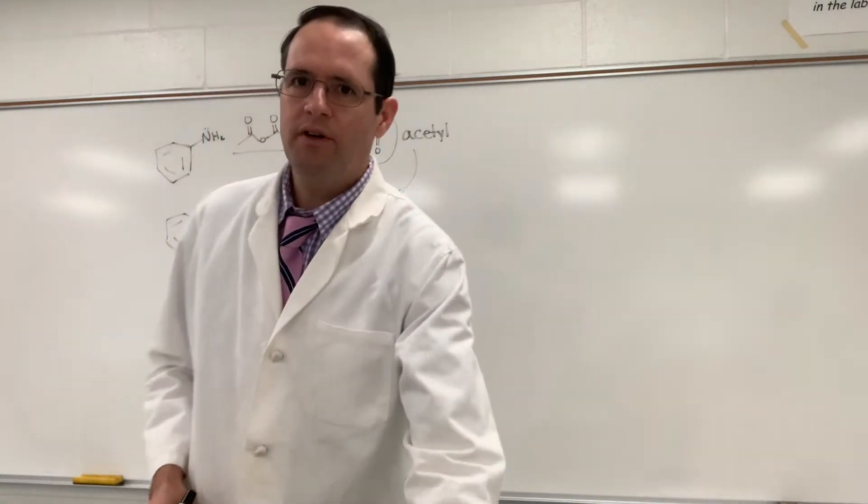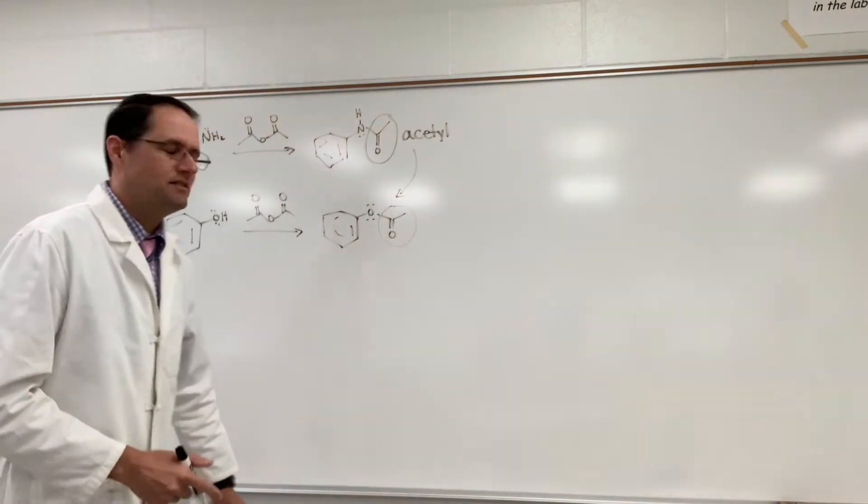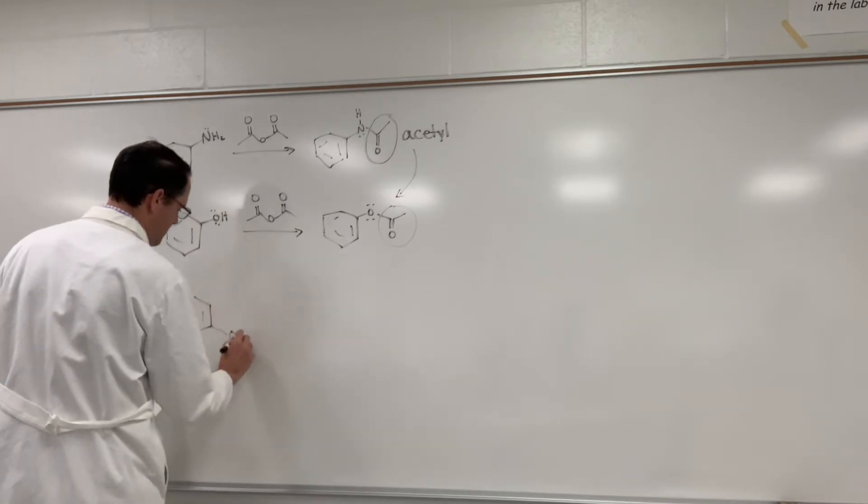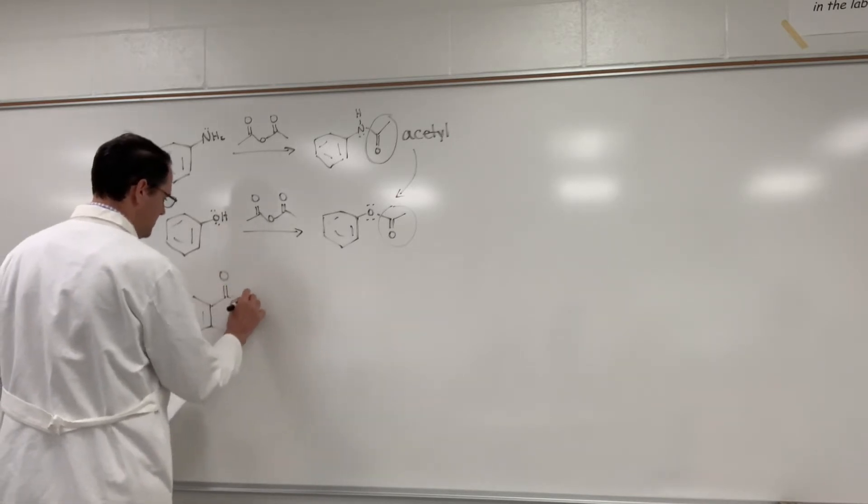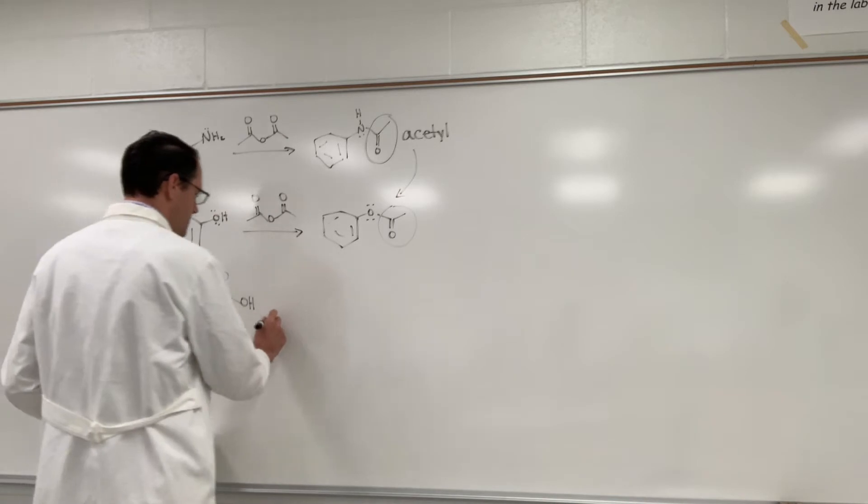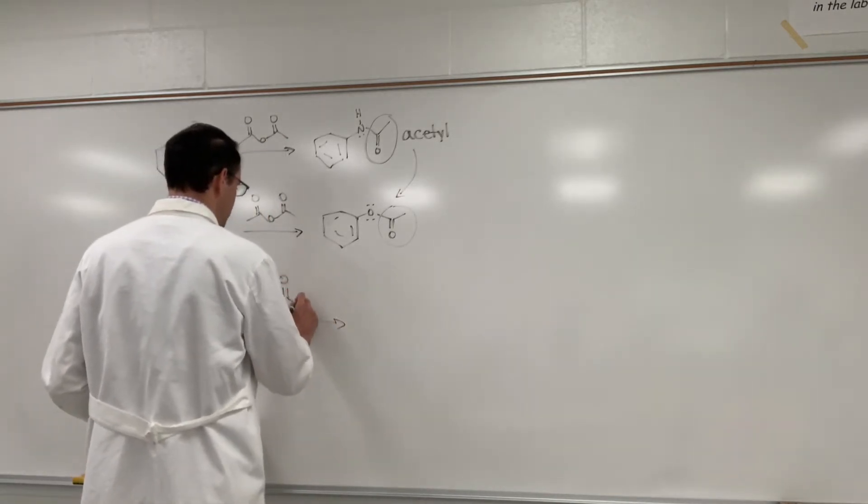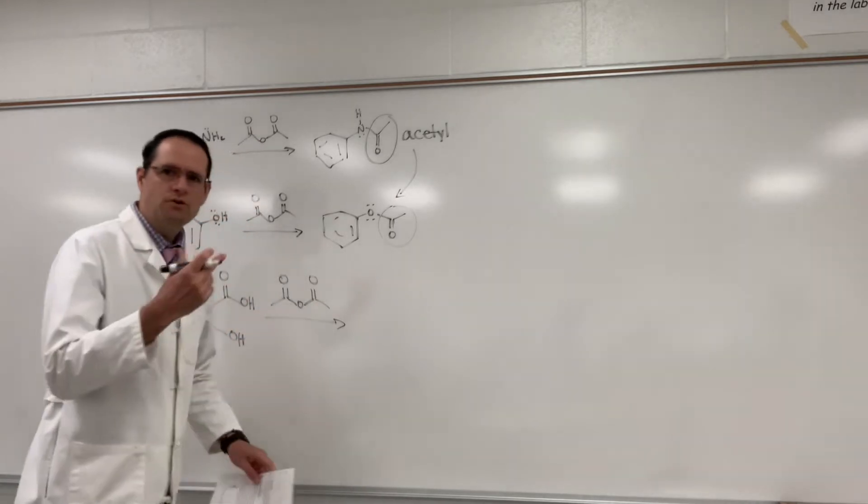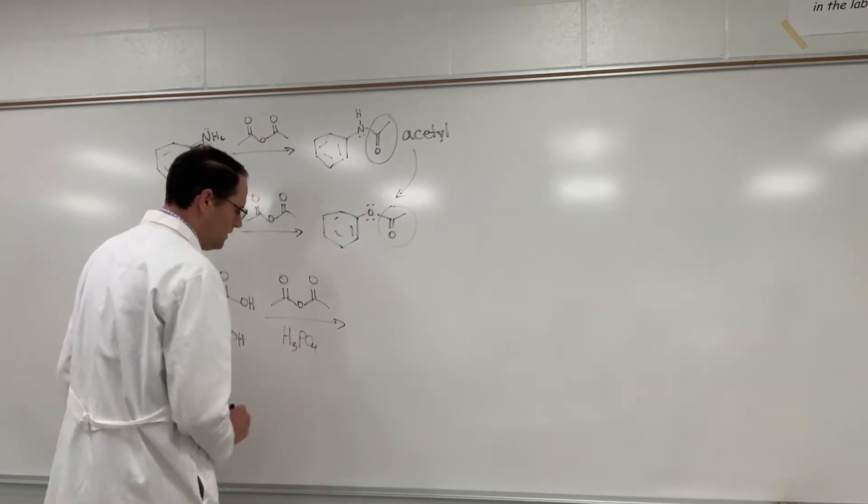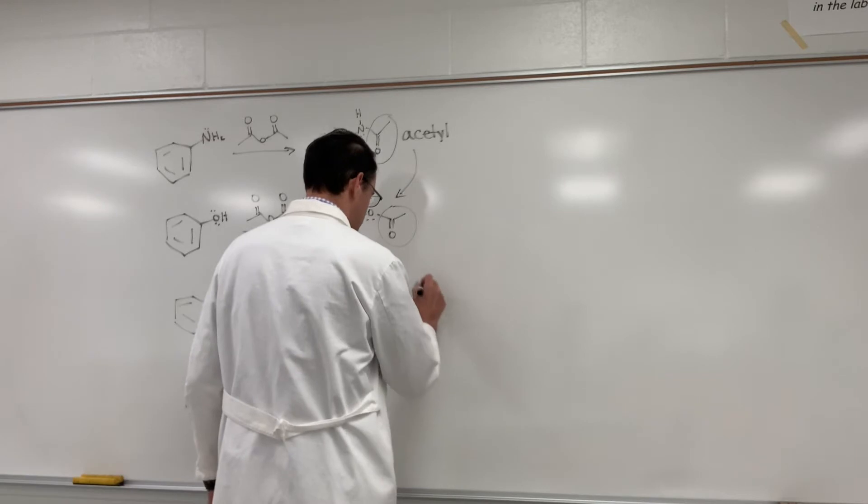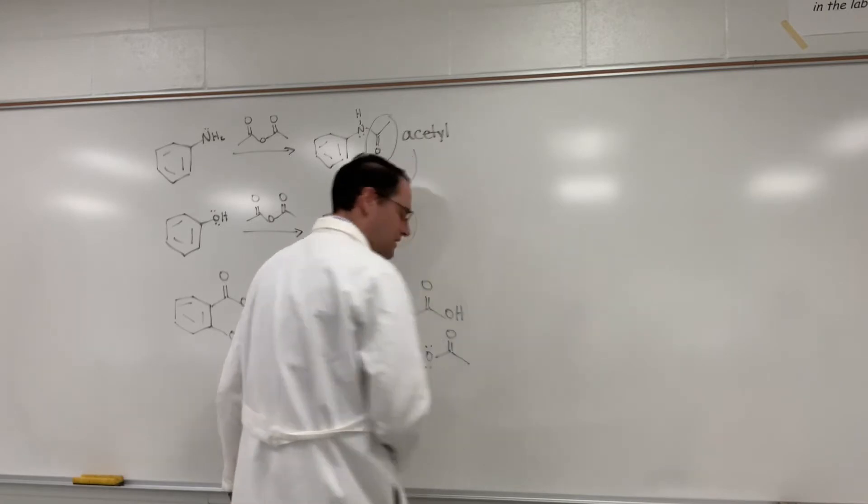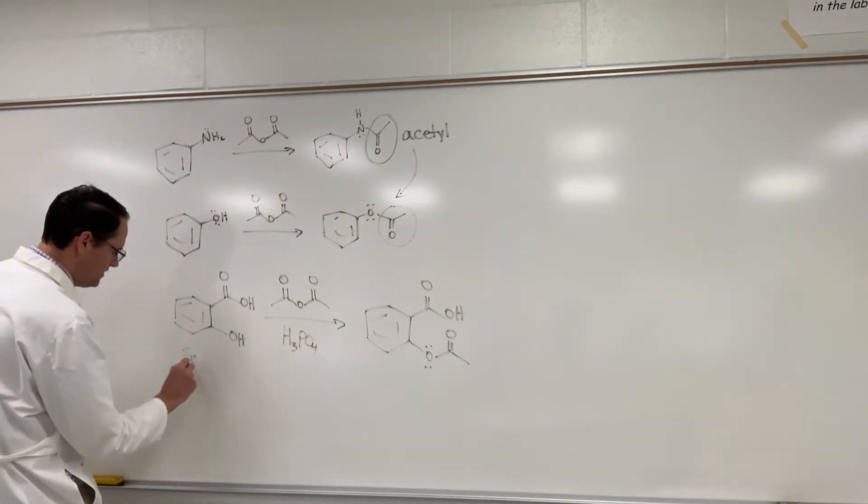In this reaction we're going to be taking something called salicylic acid. This is benzoic acid with a hydroxyl group at the ortho position and we're going to treat this with acetic anhydride with a few drops of phosphoric acid to give acetylsalicylic acid. Aspirin. This is called salicylic acid.